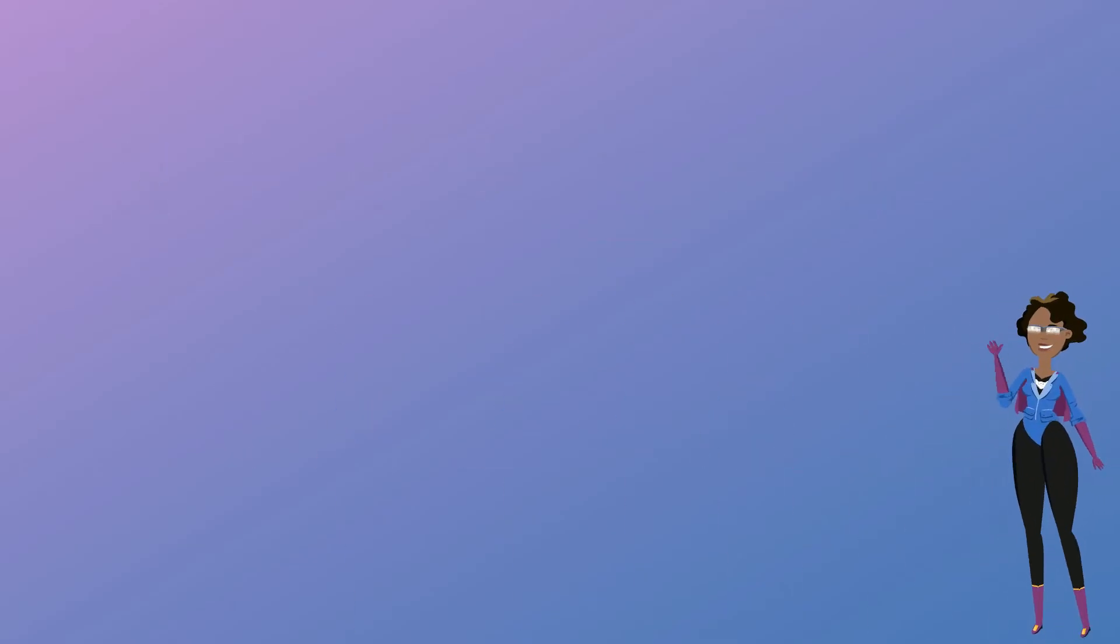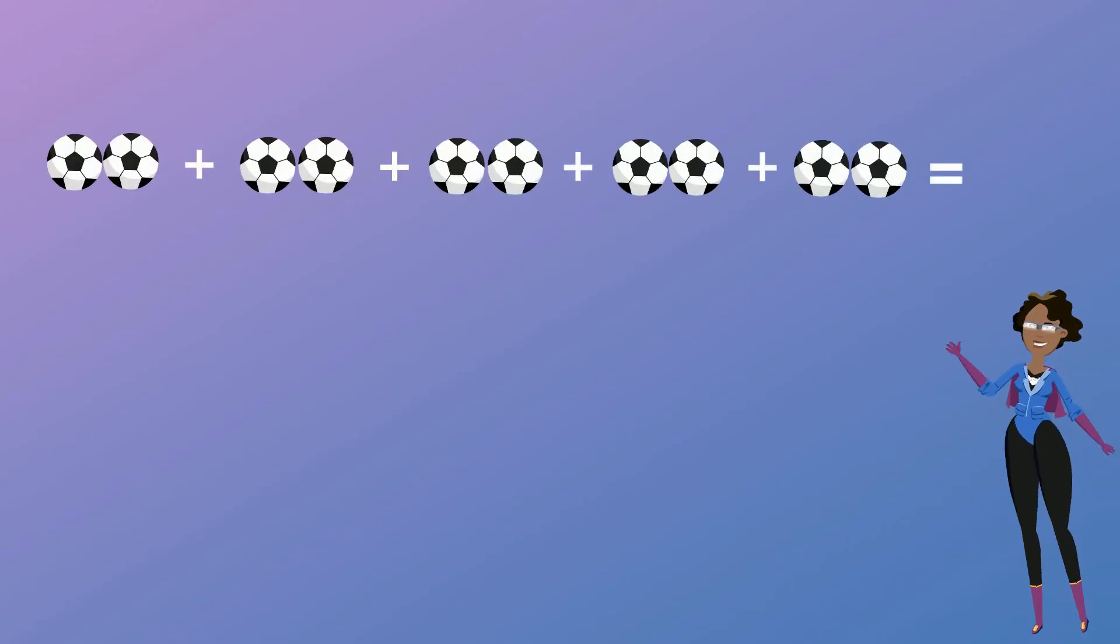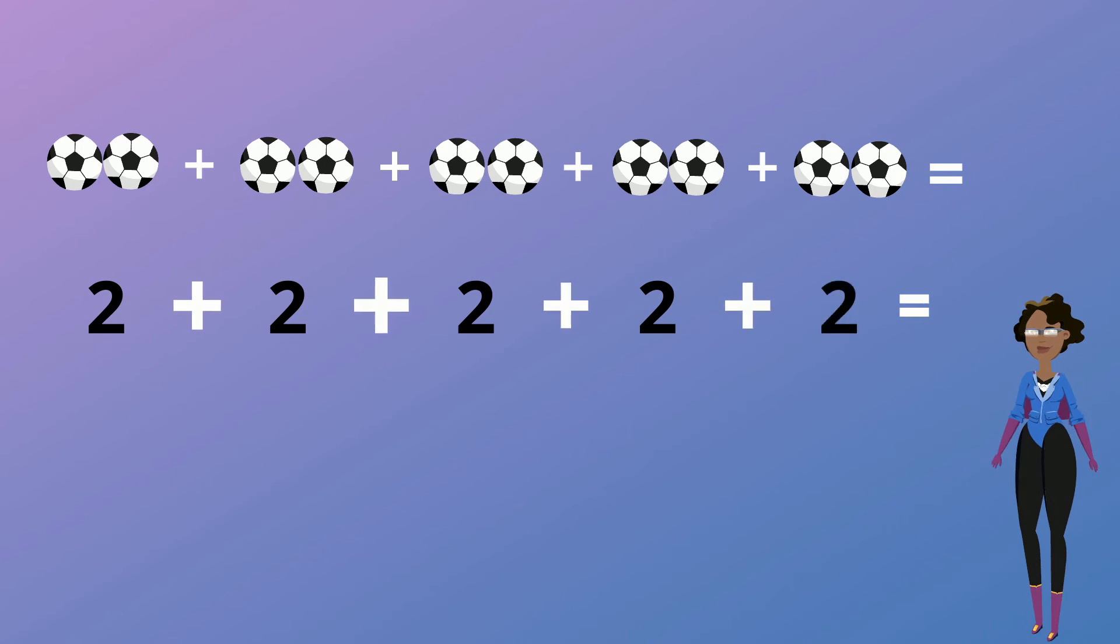Let's do one more example to make sure we understand this. We have sets of footballs shown. Let's do the addition first. 2 added to 2 plus 2 added to another 2 plus 2 gives us 10.